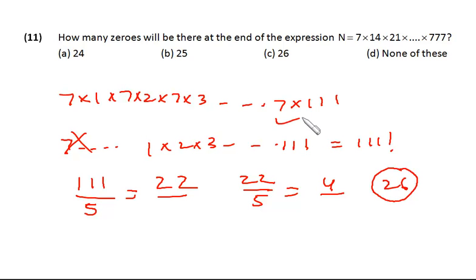So in the case of this also, it's 26. 7 will not be a part of counting number of zeros as 0 is obtained only from 2 and 5 combination.